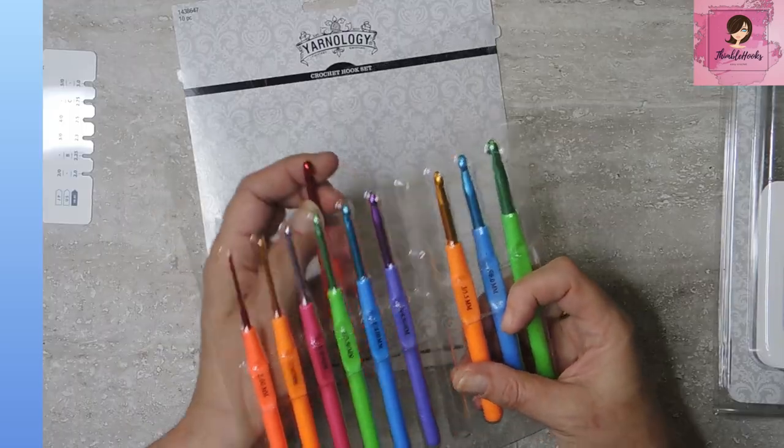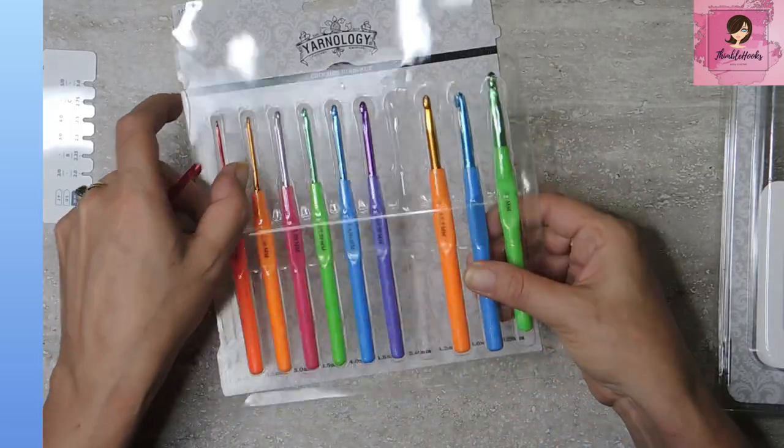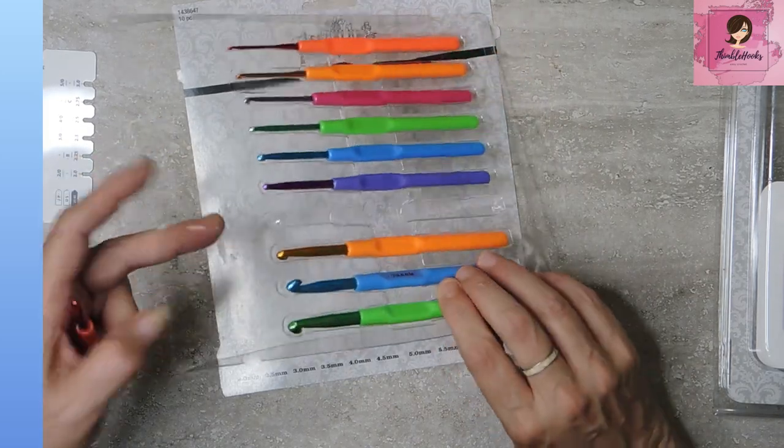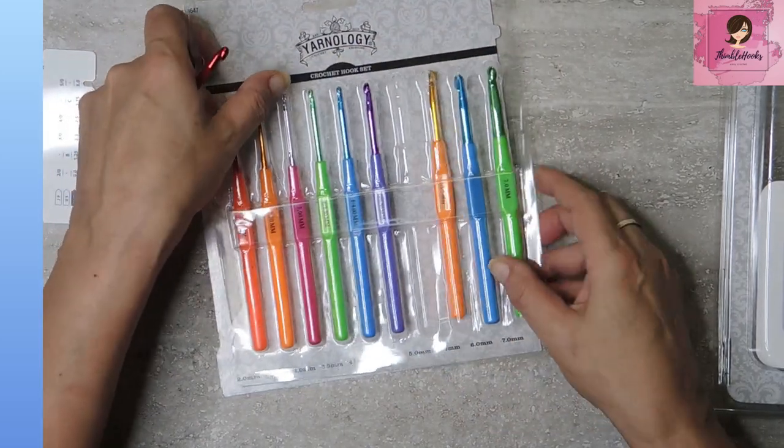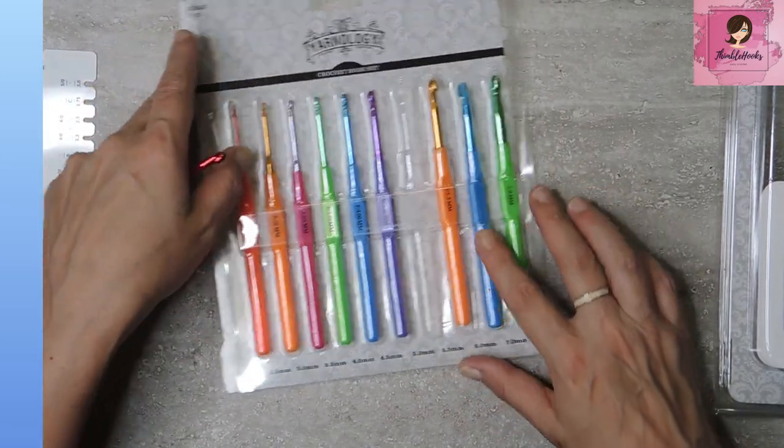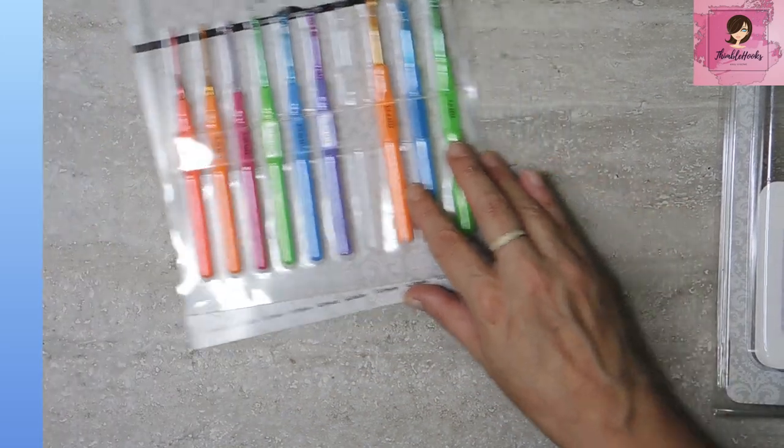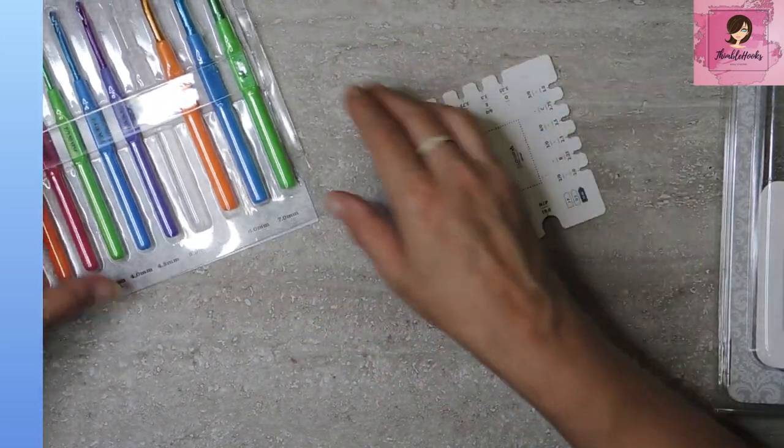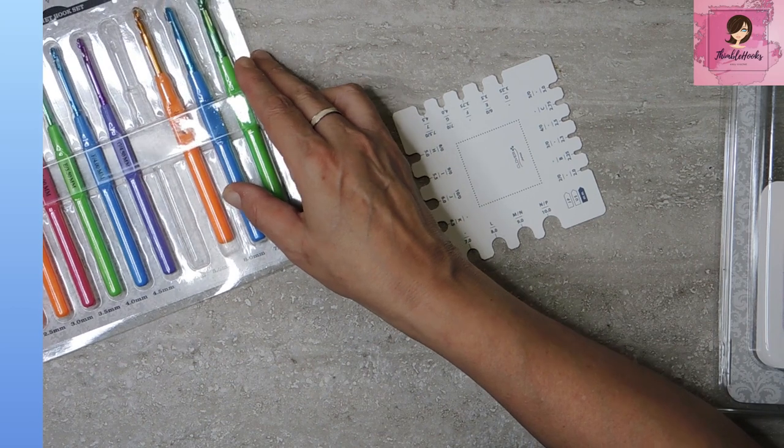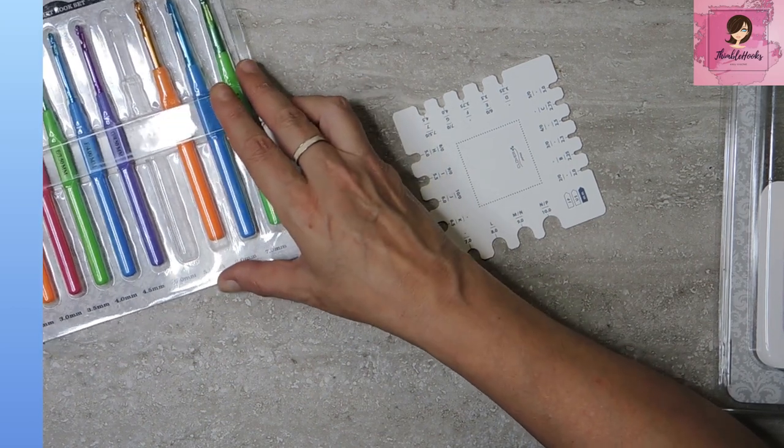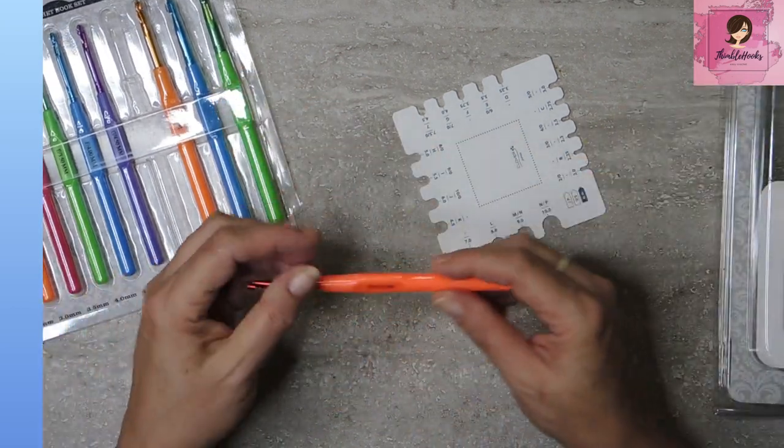I'm going to take the five millimeter right here. What a fun color. Oh, see they're falling out. I don't like that part. I don't get a case. That part makes me sad. I don't know why you don't at least put a little clamshell on it.